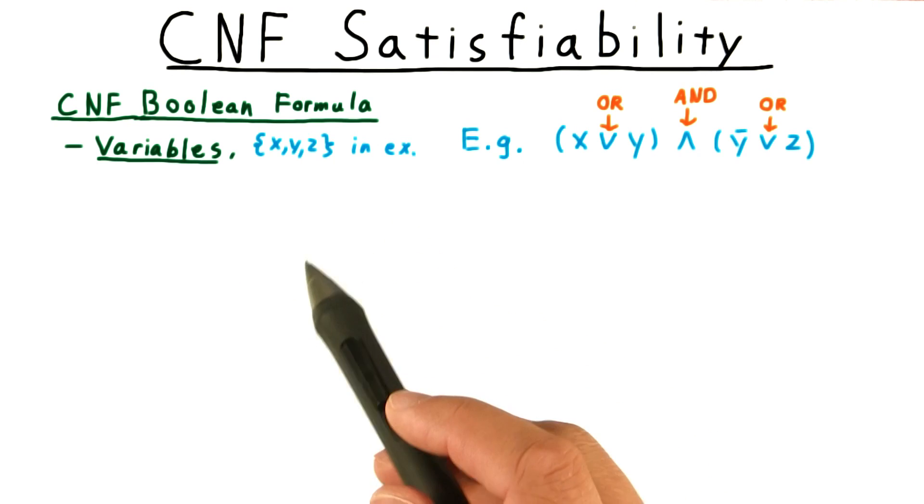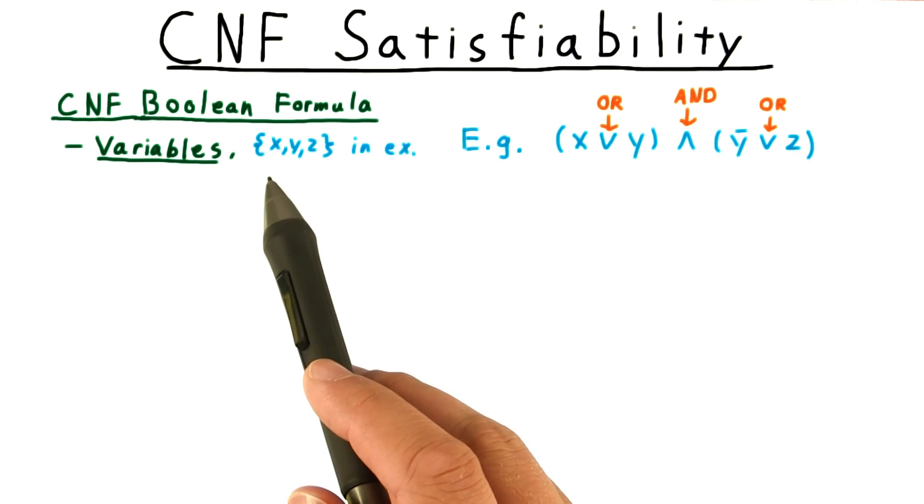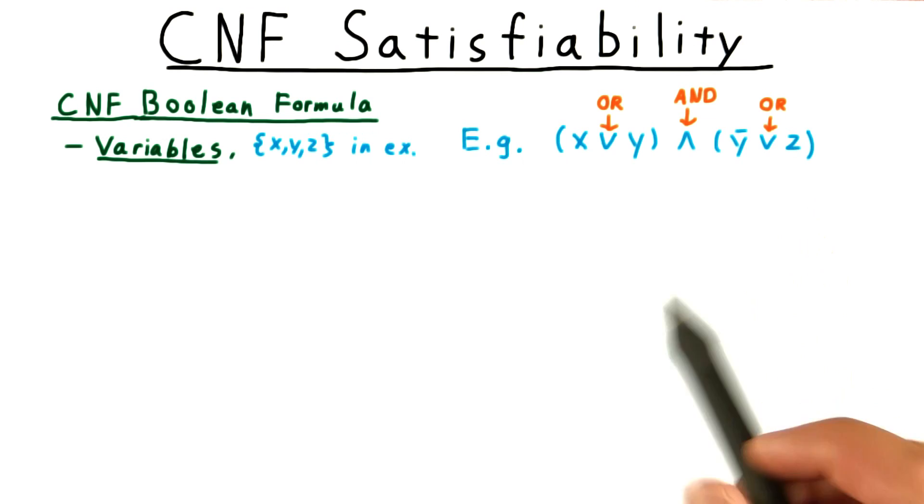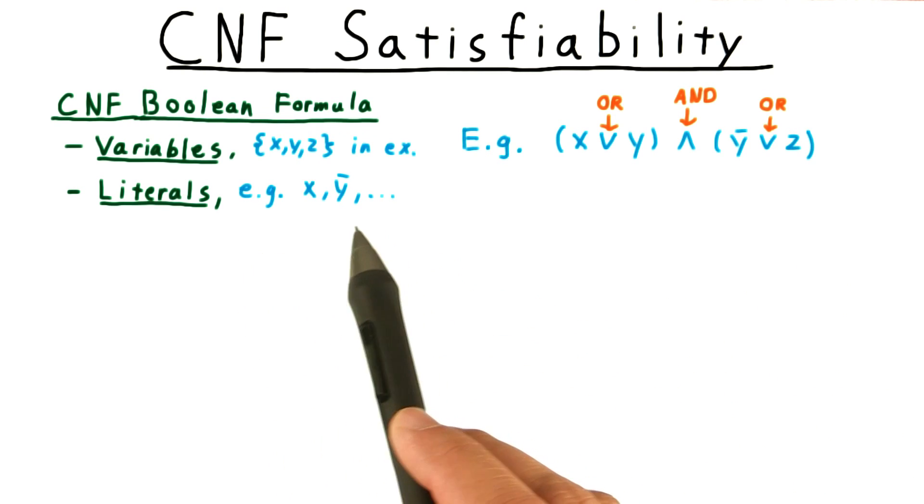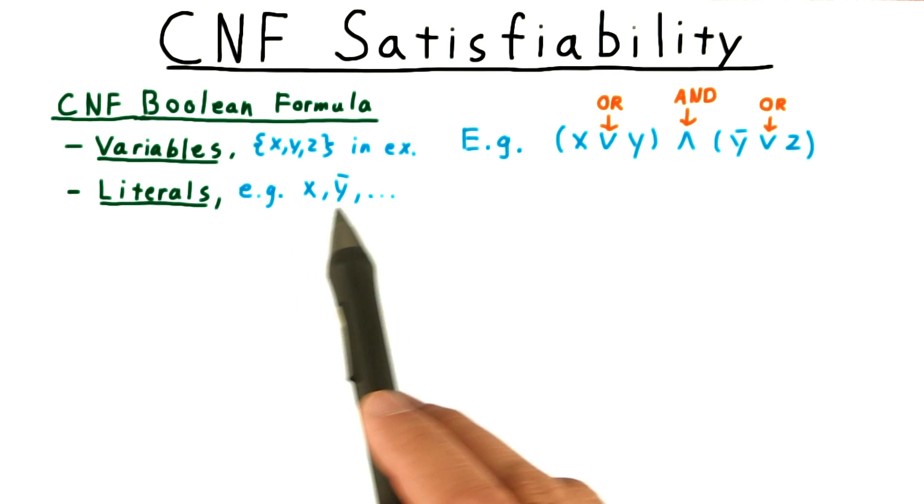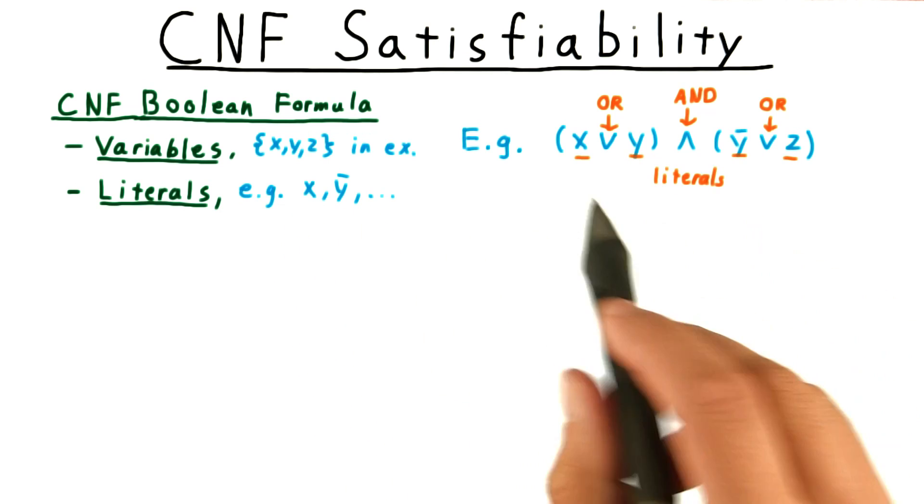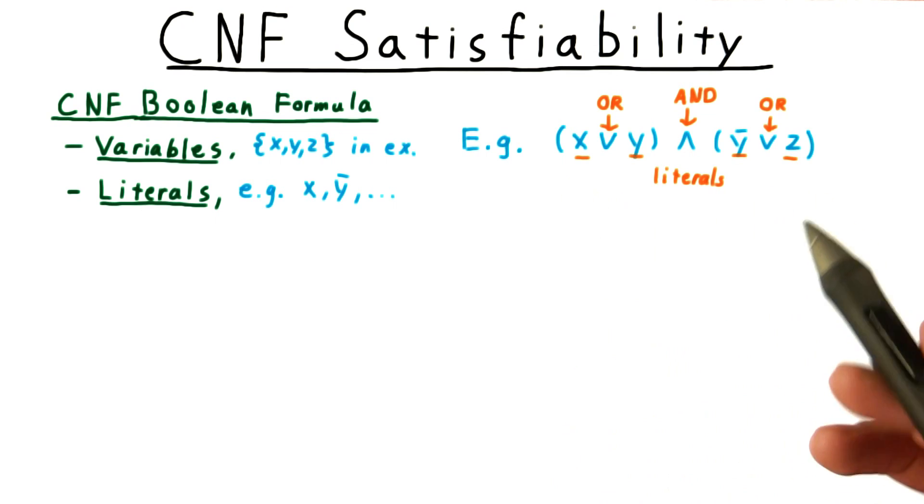For one of these formulas, we need to define a collection of variables: x, y, and z in this example. These variables appear in the formula as literals. A literal can be either a variable or the variable's negation. For example, this x, or this y bar, etc.